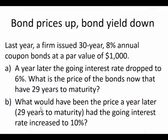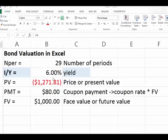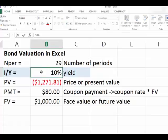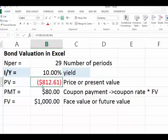Part B asks: what would the price be a year later if the going interest rate had increased to 10%? Same 30-year, 8% annual coupon, $1,000 par bond, with one year passed. Since interest rates have gone up, the bond price should come down. In Excel, we change the yield from 6% to 10%, and notice what happens — the price drops.